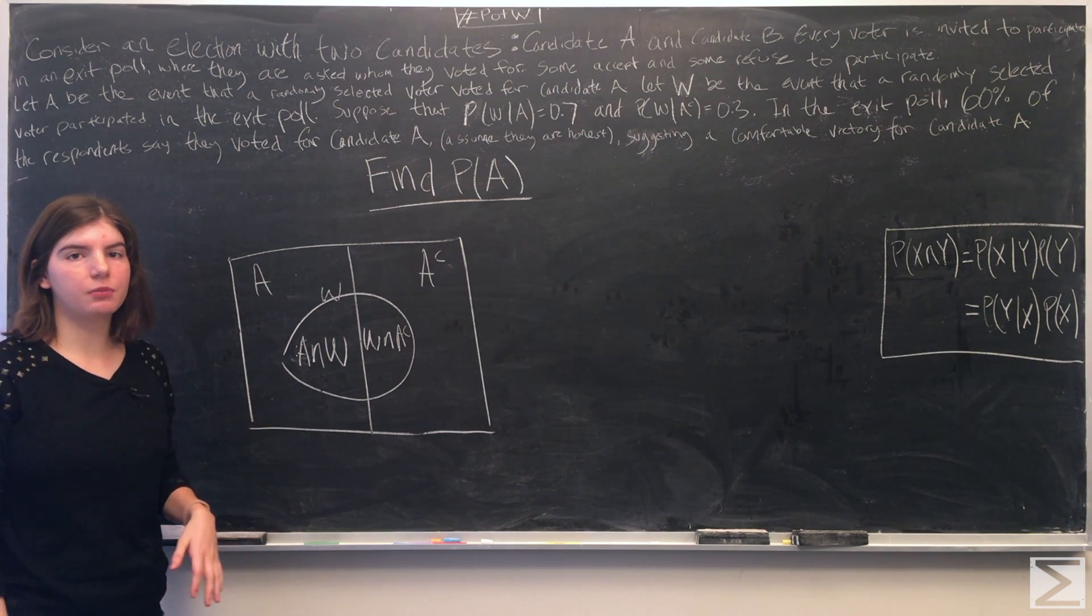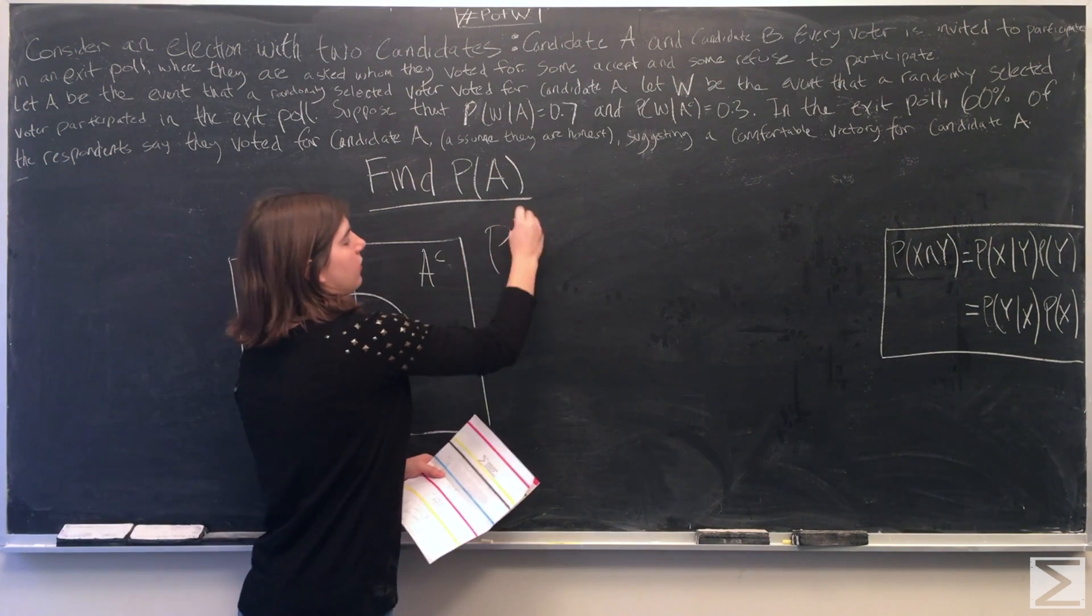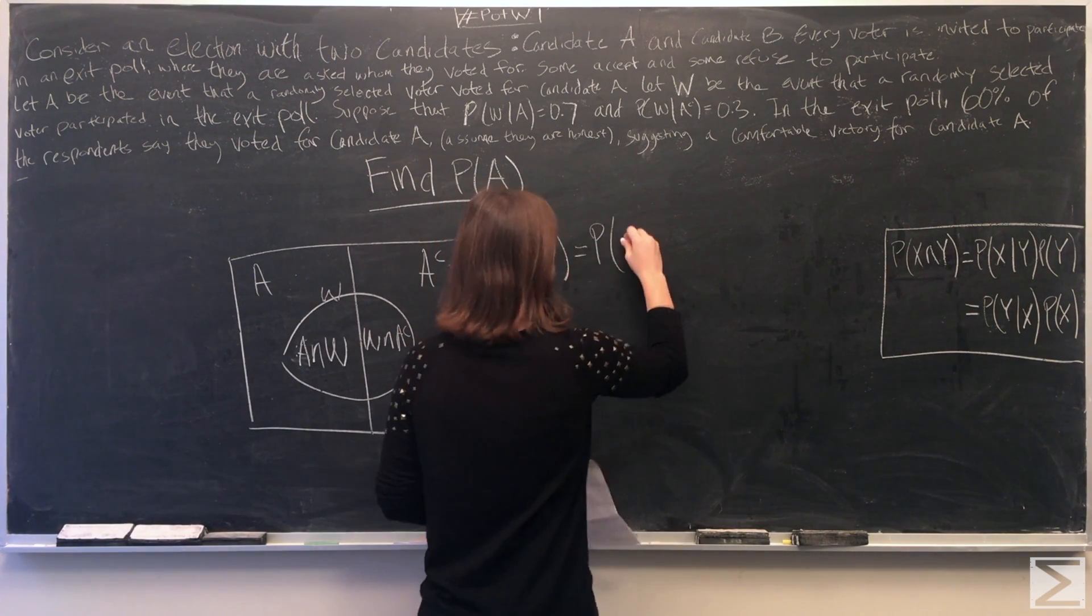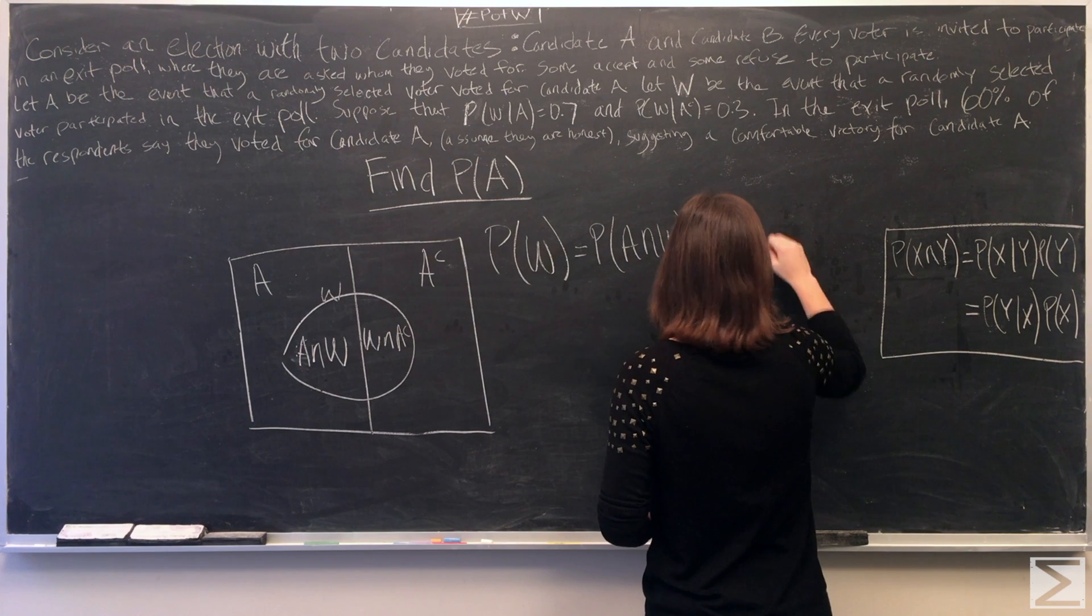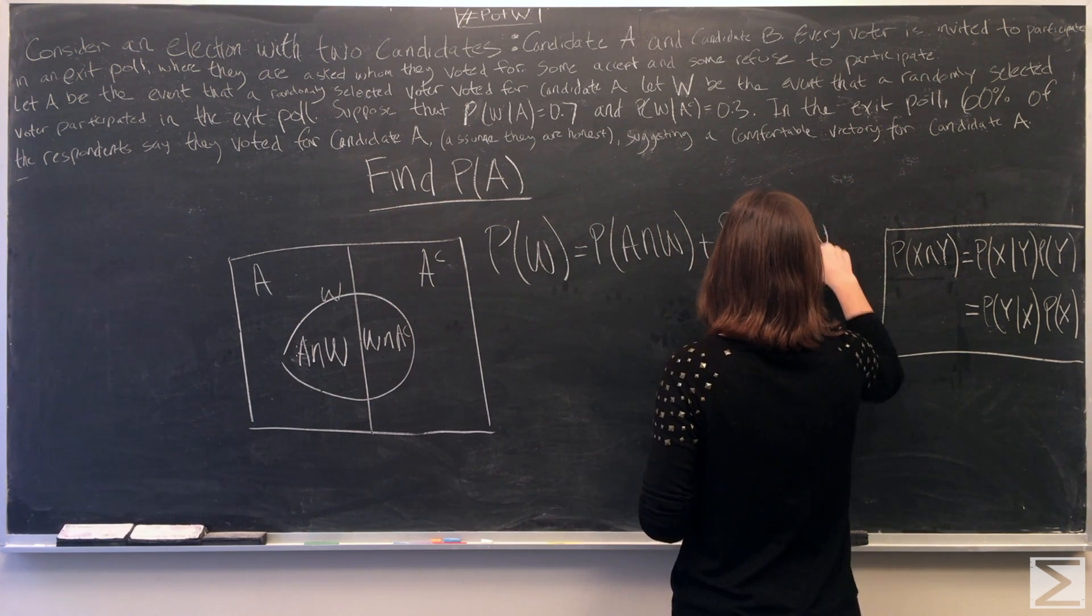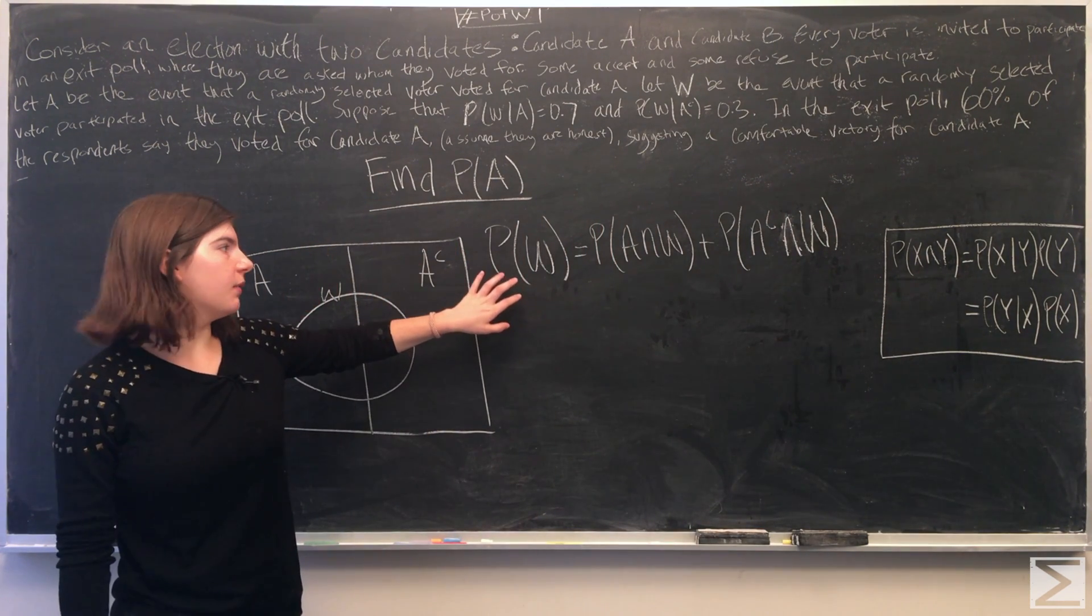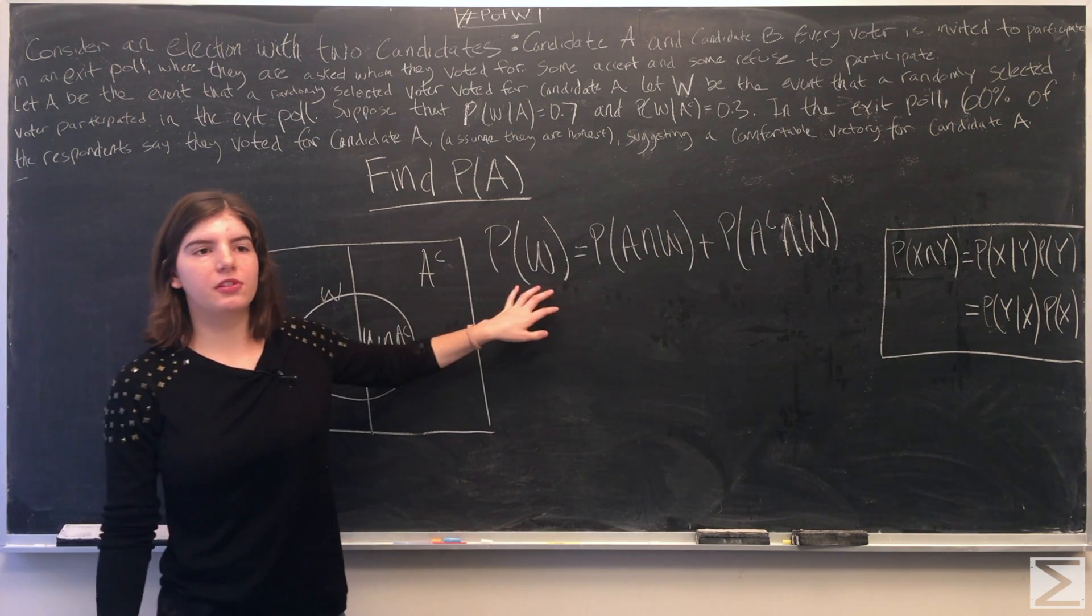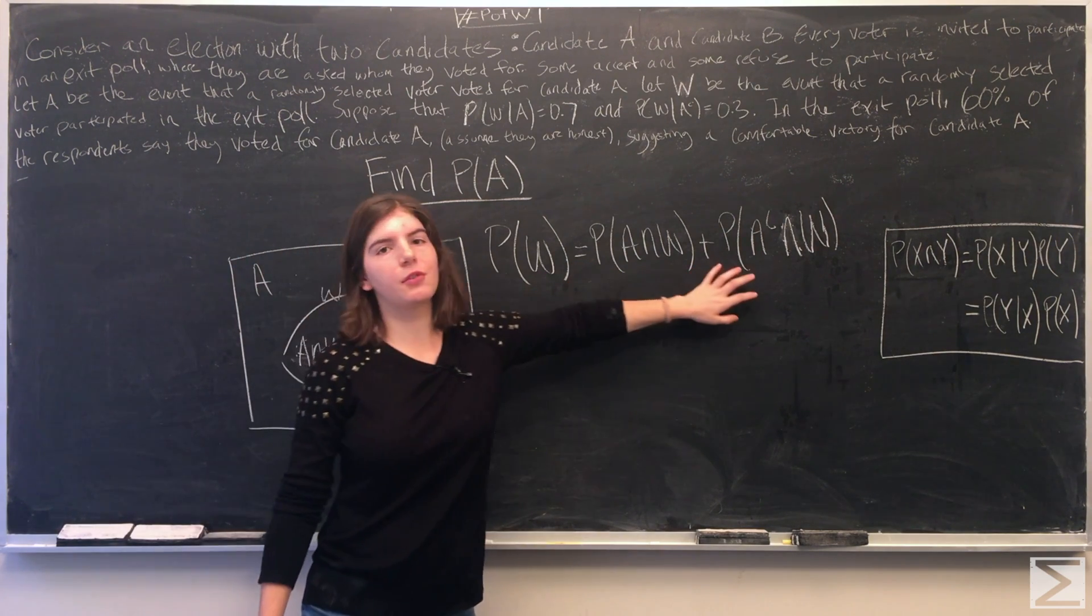So we can use the total law of probability to find the probability of W. All we did was break up W into two parts. So if a voter participated in the exit poll, they either voted for A or they did not vote for A.